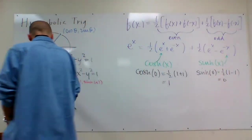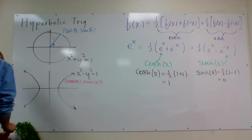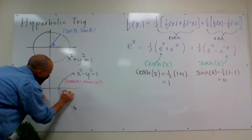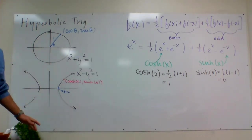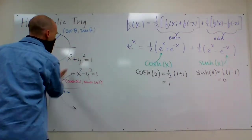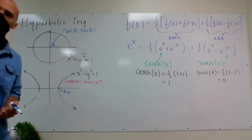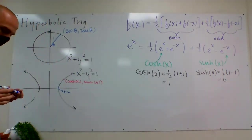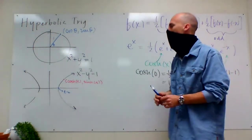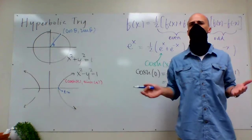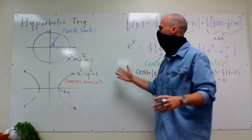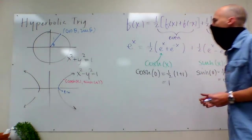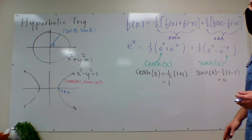So t = 0 corresponds to the starting point (1, 0) on the hyperbola. As t increases, we go up along that section of the hyperbola. Positive t's go up and negative t's go down. There was some parametric equation situation in pre-calculus or calculus that was tracing along a hyperbola, but that's not relevant to our discussion here.